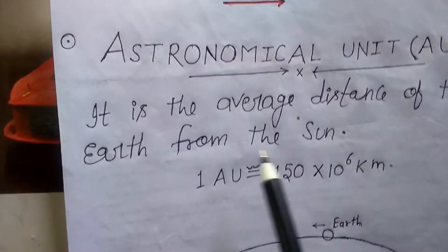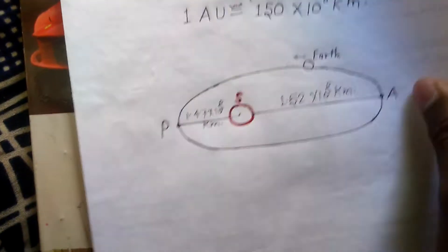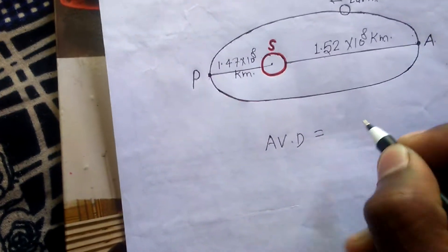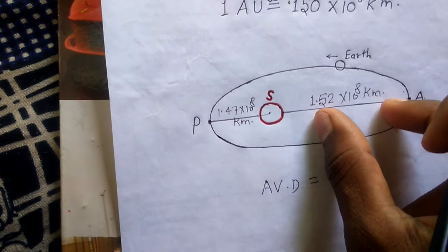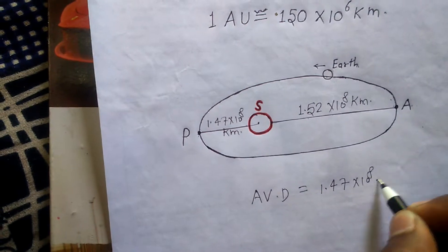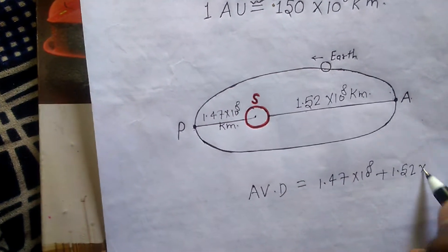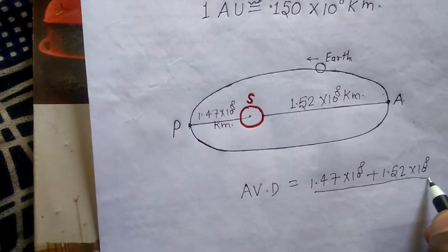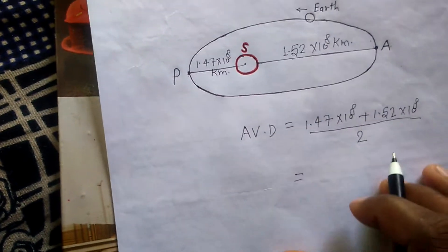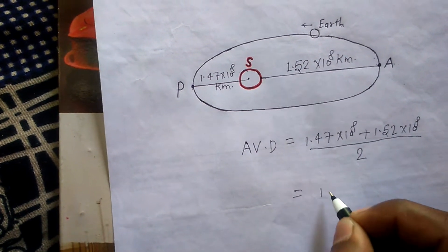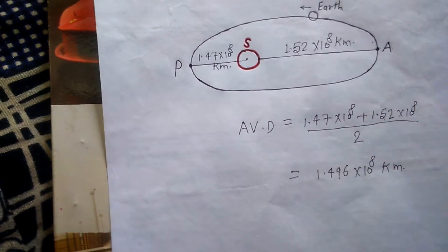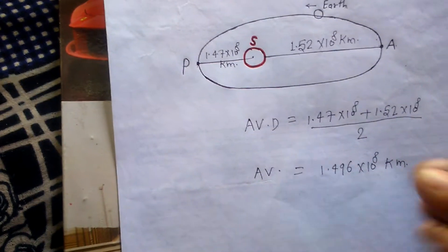As per the definition, the astronomical unit is the average distance. So the average distance equals this distance plus this distance divided by 2 — that means 1.47 × 10⁸ km plus 1.52 × 10⁸ km divided by 2. After calculating, you get 1.496 × 10⁸ kilometers as the average distance.